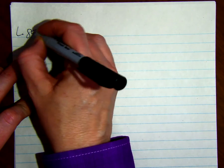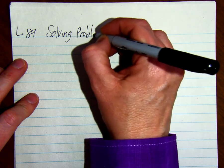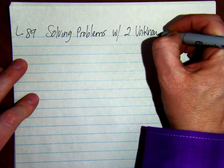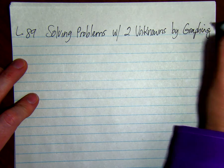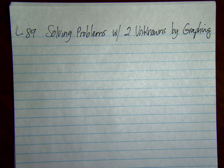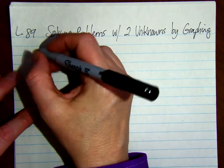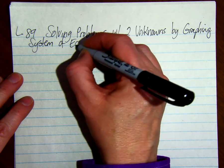Lesson 89, solving problems with two unknowns by graphing. A system of equations is two or more equations with common variables. It's called a system.